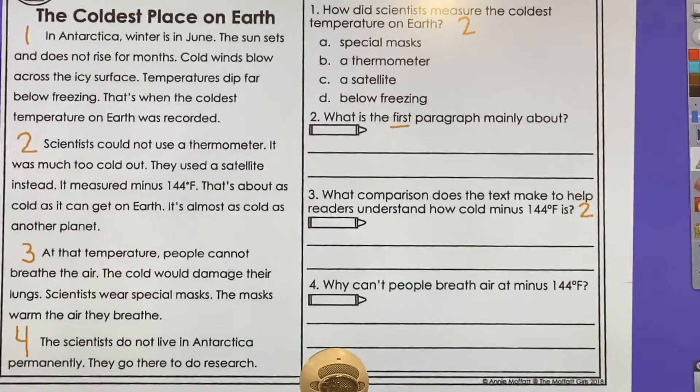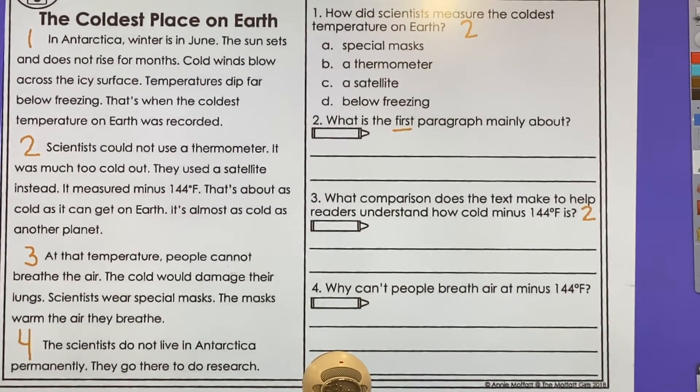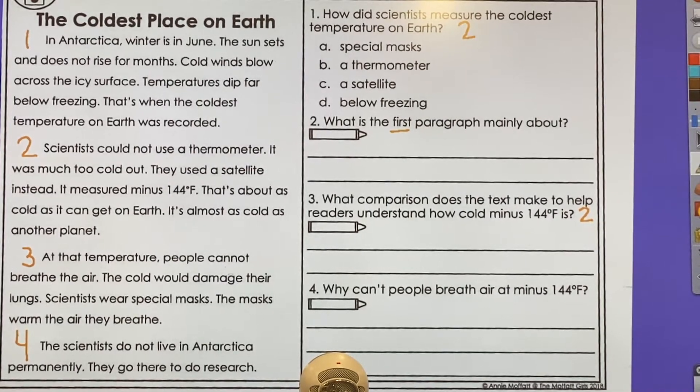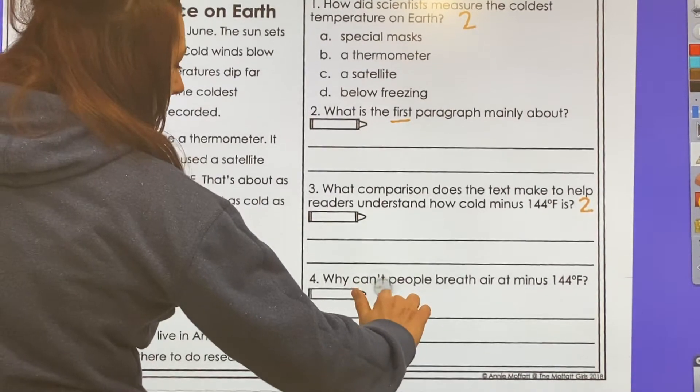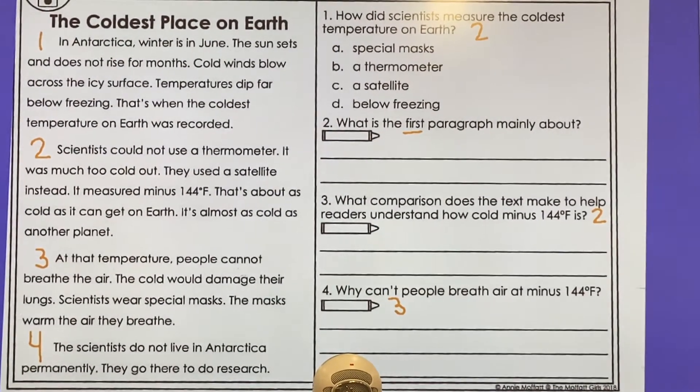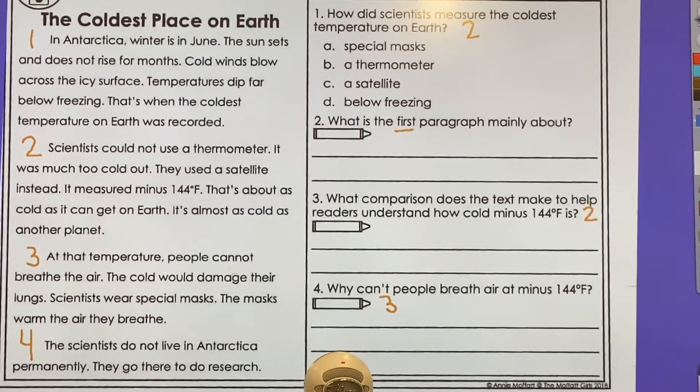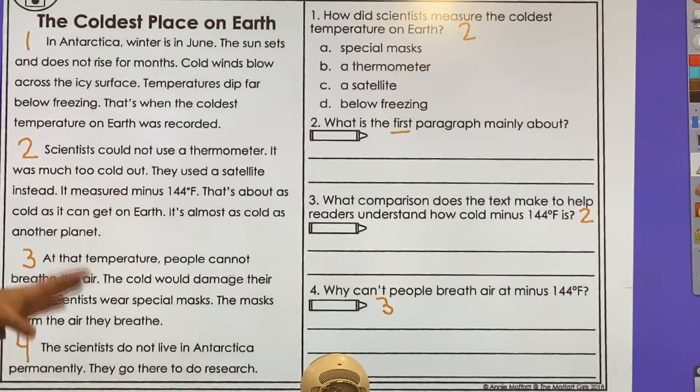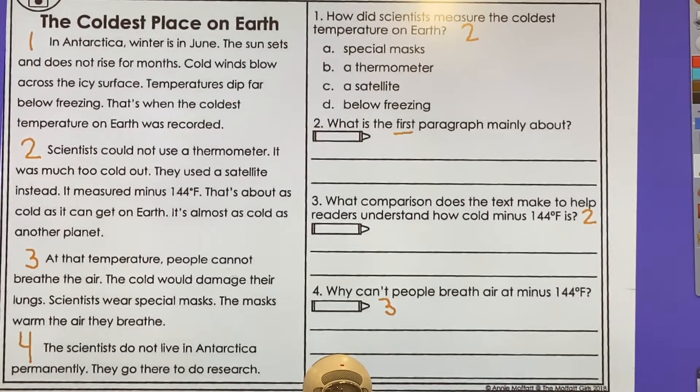And then on number four, it says, why can't people breathe air at minus 144 degrees? And if you read in paragraph three, you will find out why people can't breathe that air. What happens to them? It's very interesting. Didn't know that. So go ahead and read The Coldest Place on Earth and use this to help you find the answers. And Ms. Free will speak more on this if you watch the second video.